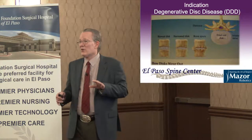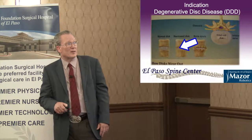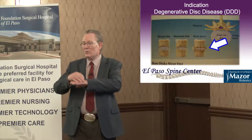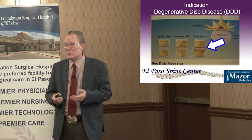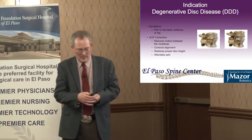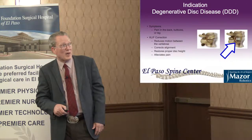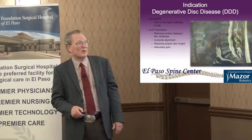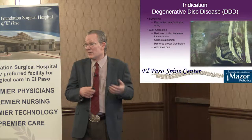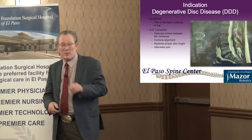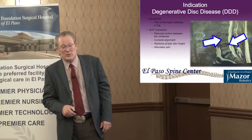In degenerative disc disease, over time you wear out the disc until you have bone rubbing on bone. When that happens, bone spurs develop and close off the spinal canal, producing spinal stenosis. Spinal stenosis causes back, buttock, and leg pain. The way we fix it is: we use the tube, go down to where the disc is collapsed, and place a new disc — restoring the normal height and alignment and unpinching the nerve. We diagnose that with an MRI study.